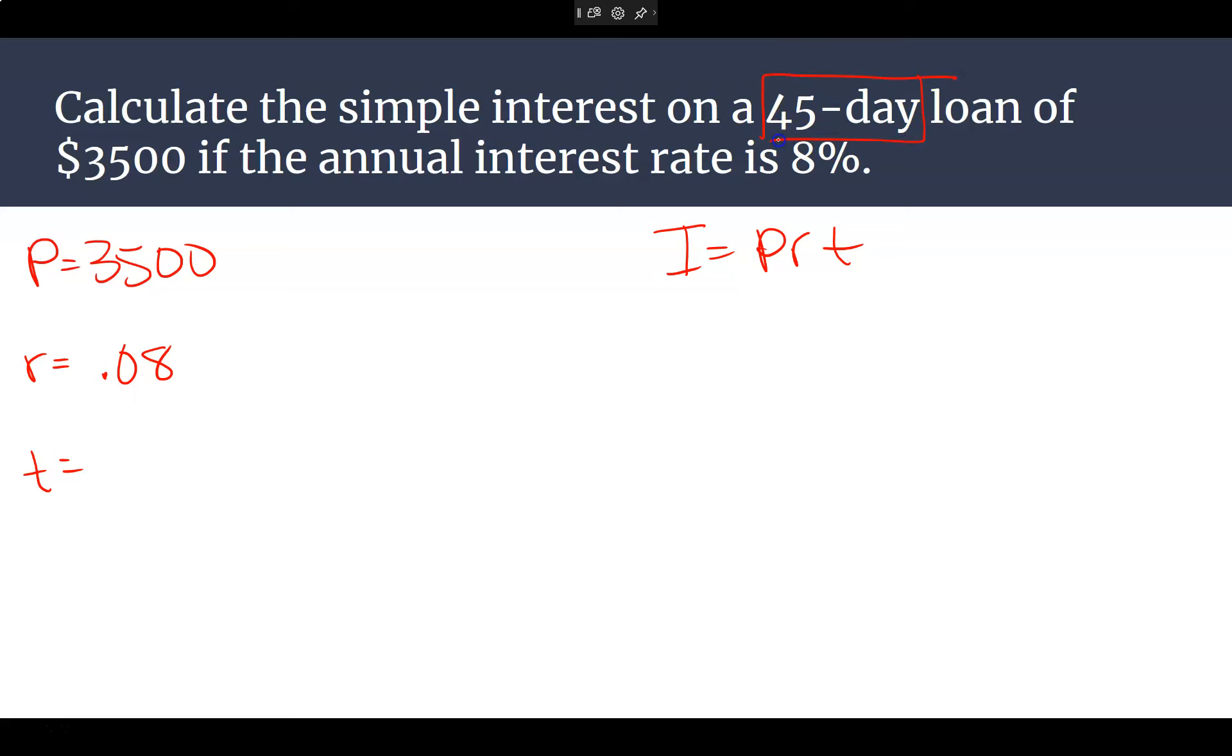And now our time, it's a 45-day loan, so we're going to do 45 over 360. Do I need to simplify this fraction? No. Do I need to make it a decimal? No. Leave it alone. Make things simple. Keep it simple. So when we set this up, our interest equals our $3,500 times the rate times our time, which is 45 out of 360 days. Let me know what you get.